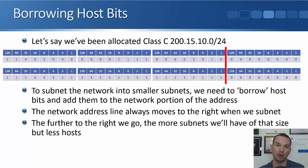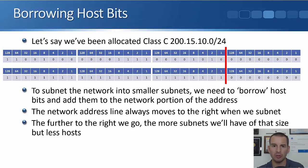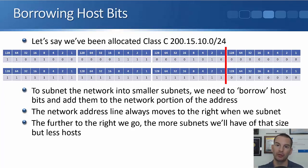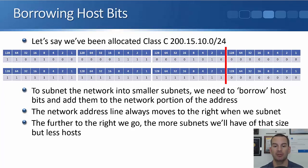We can buy a single class C range and then divide that network up into smaller networks and assign it to the different parts of our network. In the example, let's say we've got that class C range, and it is 200.15.10.0/24 — the default class C subnet mask. To do our subnetting, to divide that network into smaller subnets, we need to borrow some host bits and add them to the network portion of the address. We're going to move the line that separates the network portion and the host portion further to the right. When we do subnetting, the line always moves to the right, and the further to the right we go, the more subnets we're going to have, but the fewer hosts we'll have on each subnet.